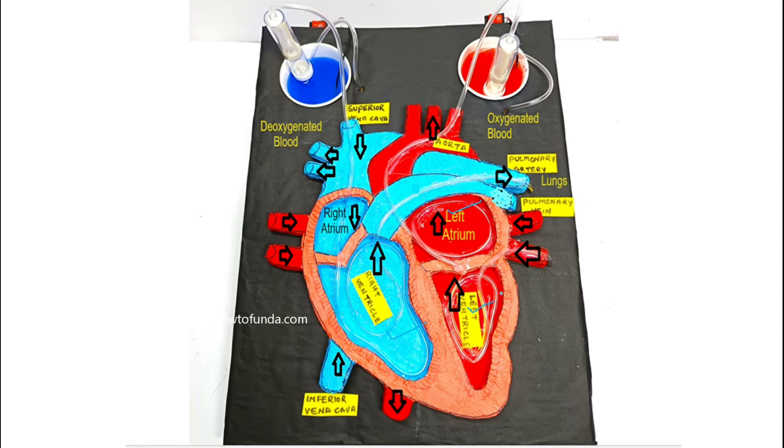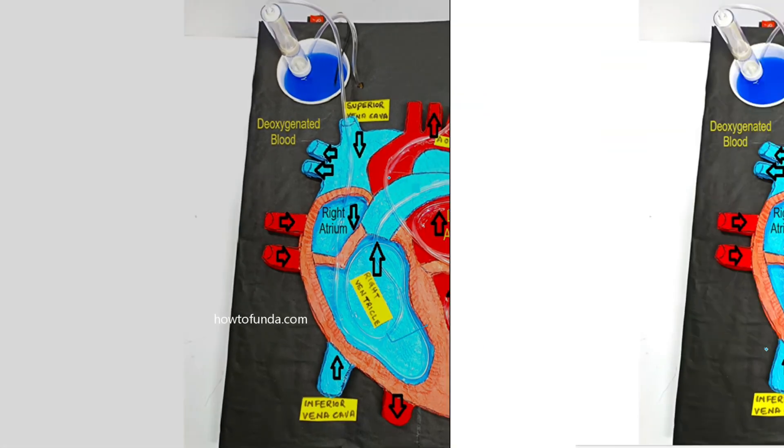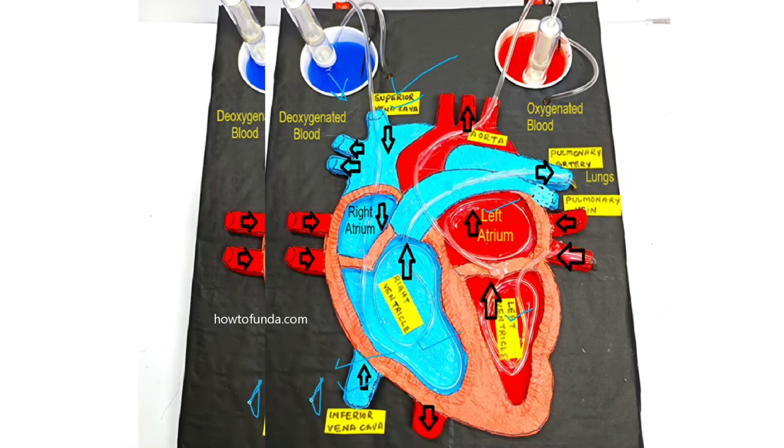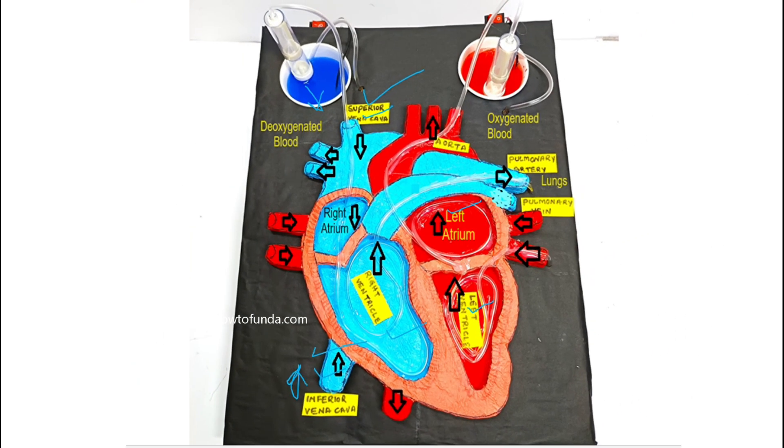And we have superior and inferior vena cava. The superior and inferior vena cava, these are the large veins that carry deoxygenated blood, where deoxygenated blood is nothing but blood without oxygen from various parts of the body back to the heart.